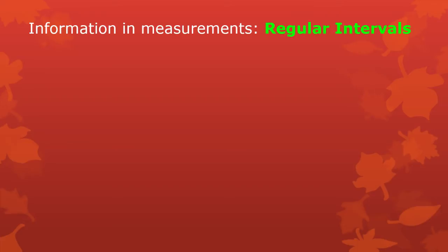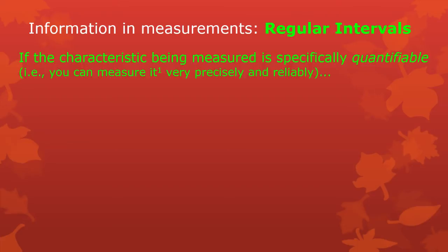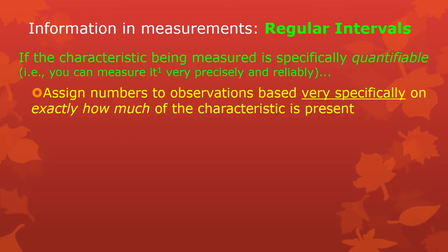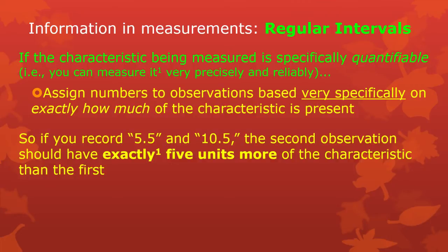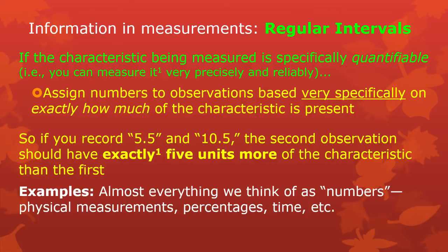Regular intervals is the third kind of information that might be in measurements, and it's the most complex and most useful type. If the characteristic being measured is ordered, but the order is specifically quantifiable — meaning you can measure it very precisely and reliably, limited only by your measurement tools — then assign numbers tied very specifically to exactly how much of the characteristic is present. If you record 5.5 and 10.5 for two separate observations, the second one needs to have exactly five more of whatever you're measuring than the first. Examples are all physical measurements, counting anything, and percentages.